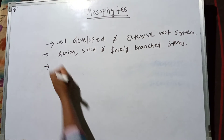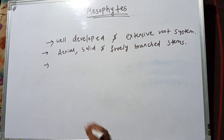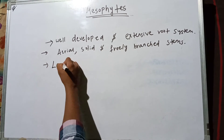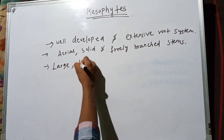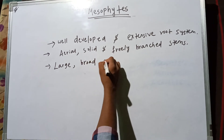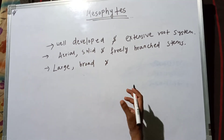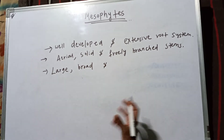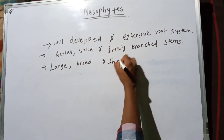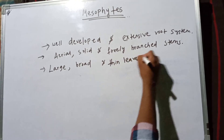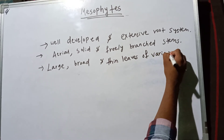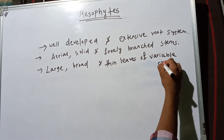The third feature is that mesophytes generally have large, broad, and thin leaves of variable shapes.